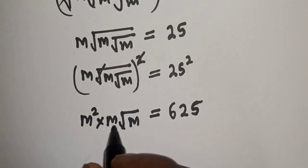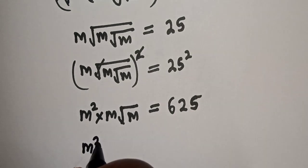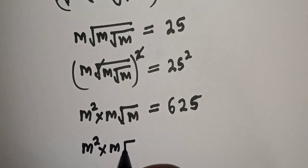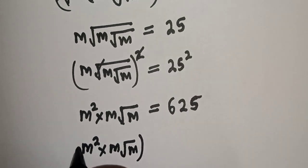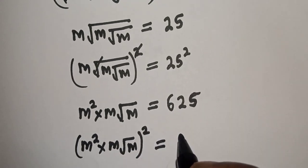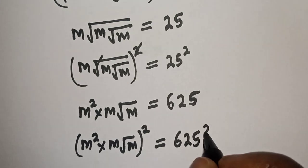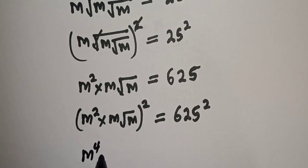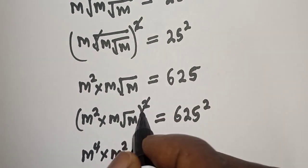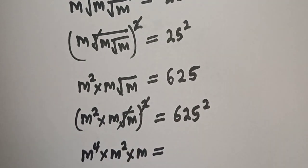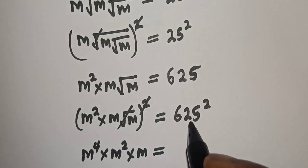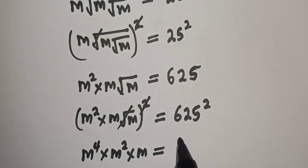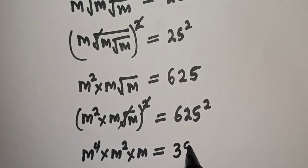Now let's square both sides again. We have m squared multiplied by m times square root of m, all squared, is equal to 625 squared. This gives us m raised to power 4, multiplied by m squared, multiplied by m, all equal to 625 squared, which is 390,625.